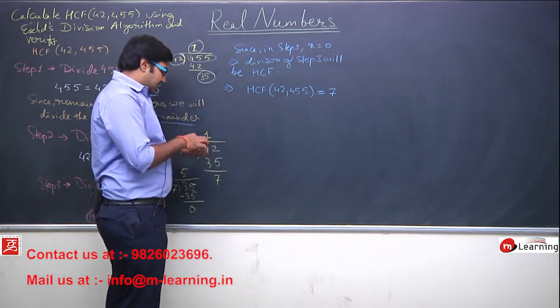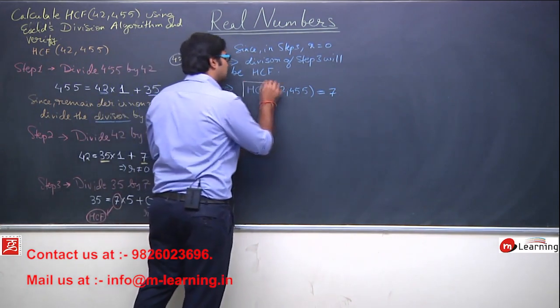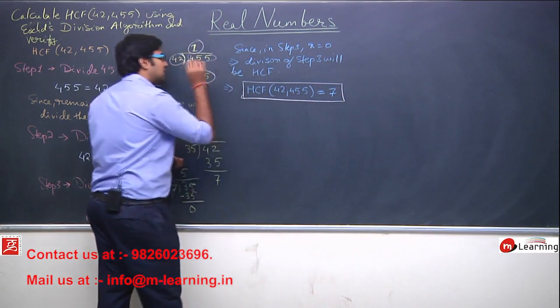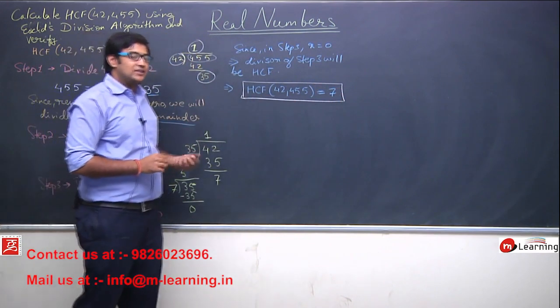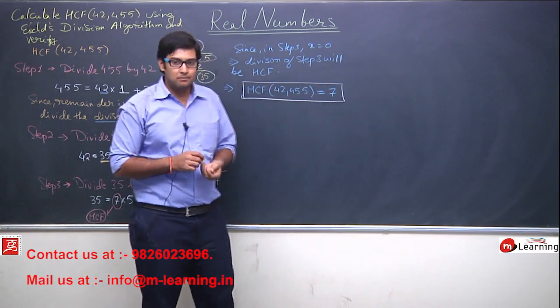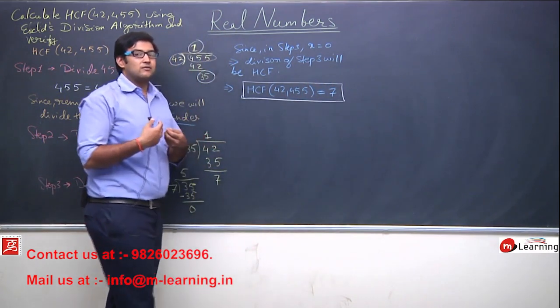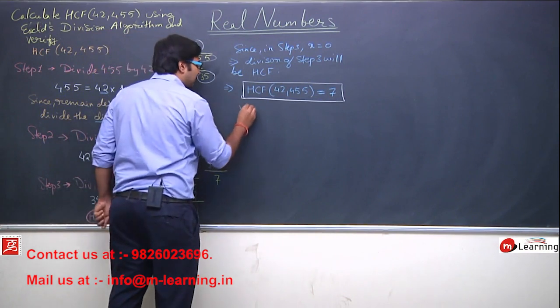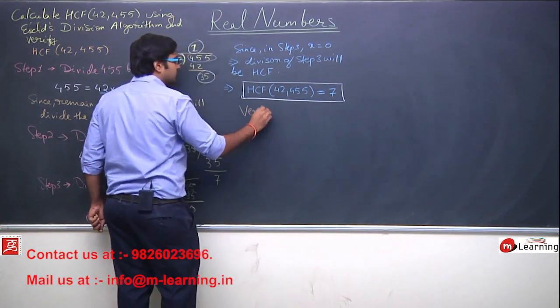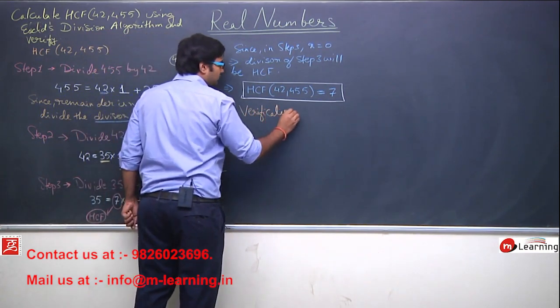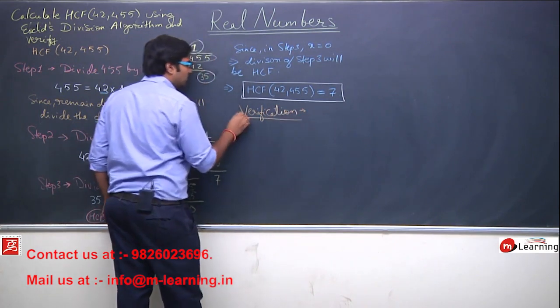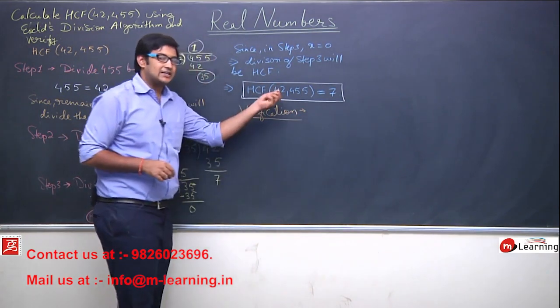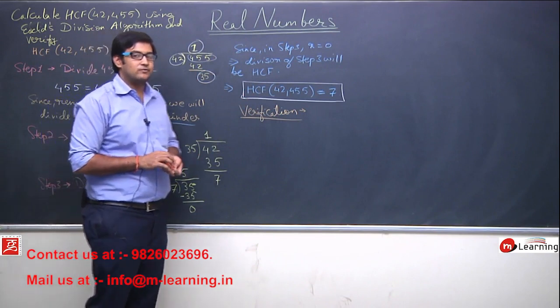Now, so we have got the HCF using the Euclid's division algorithm. Now let us verify this HCF using our traditional method, using our factor method, factorization method. So let us verify. So verification, we will verify this result. How? I will determine the factors of 42 as well as 455.